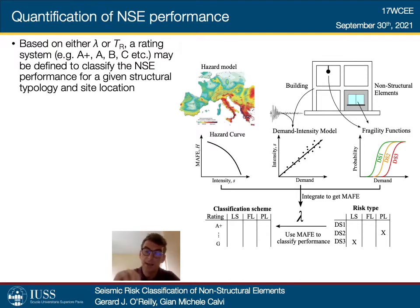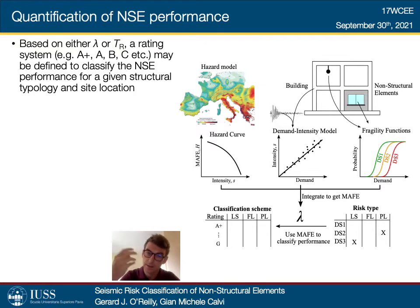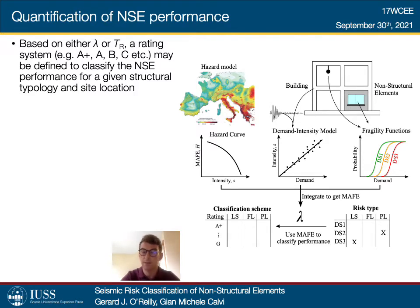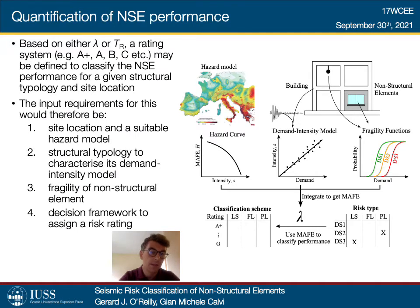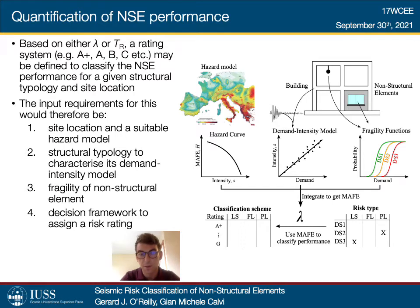If we can tag each damage state with a different type of risk and estimate the mean annual frequency of exceeding that particular damage state, we can begin to classify, compare, and rank each of these risks with respect to each other — similar to what was mentioned with Sisma Bonus. The inputs are: site location and hazard, structural typology and its demand intensity model, the fragility of the non-structural elements, and some kind of decision framework to assign a risk rating. This decision framework is the key.